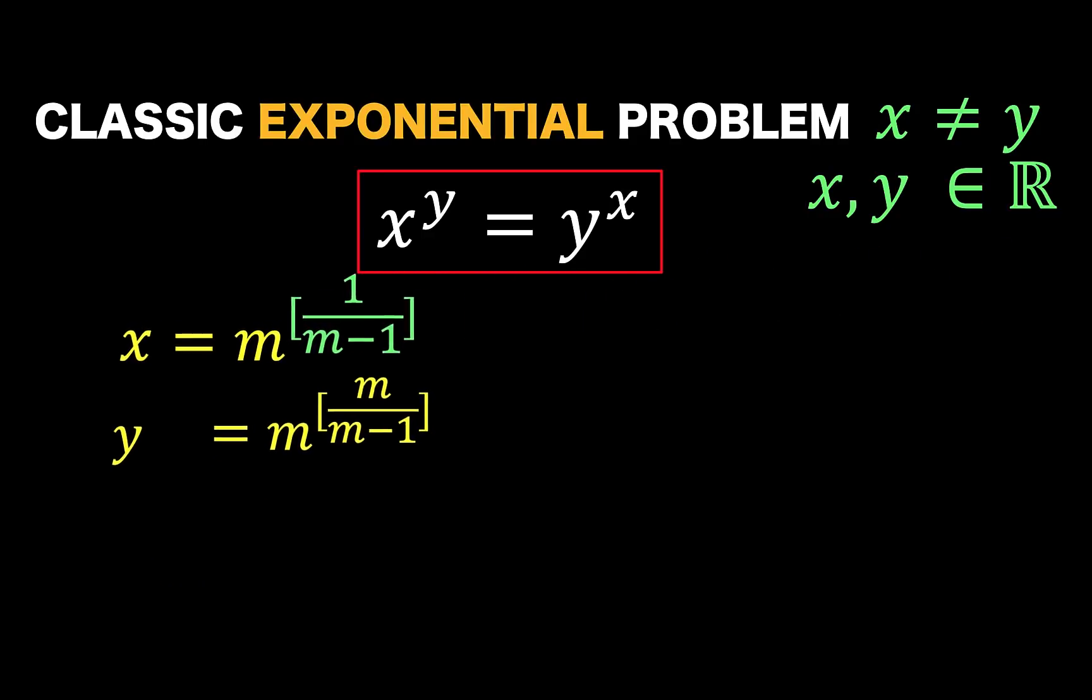So, y is equal to m raised to m over m minus 1. And we now have these two formulas, one for computing for x, and the other is for computing for y.